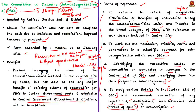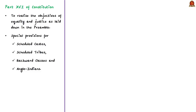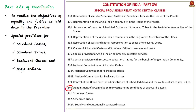This commission was constituted under Article 340 of the Indian Constitution. This article is in Part 16 of the Indian Constitution, which pertains to special reservations relating to certain classes and is included in the Constitution to realize the objectives of equality and justice as laid down in the preamble. Historically, certain castes and groups have faced exclusion from the mainstream due to their backwardness. For their betterment, the Constitution has made certain special provisions for Scheduled Castes, Scheduled Tribes, backward classes, and Anglo-Indians.